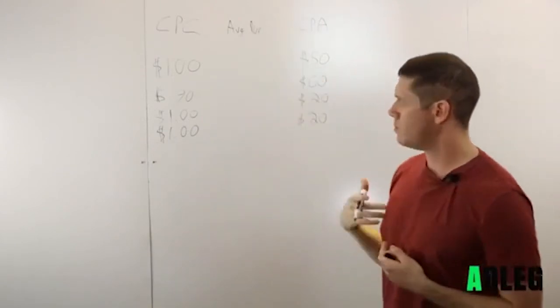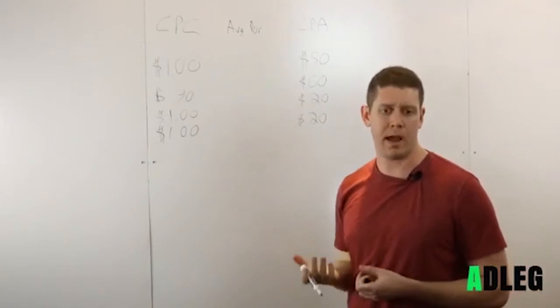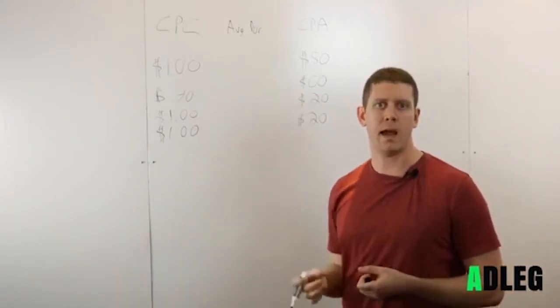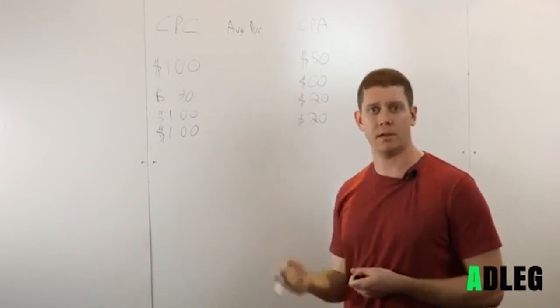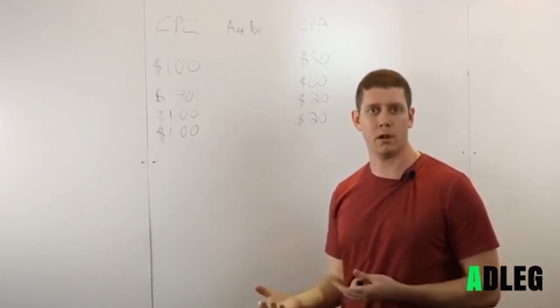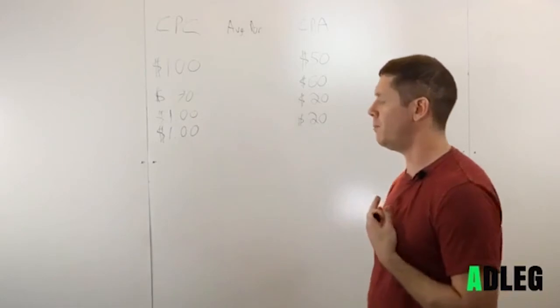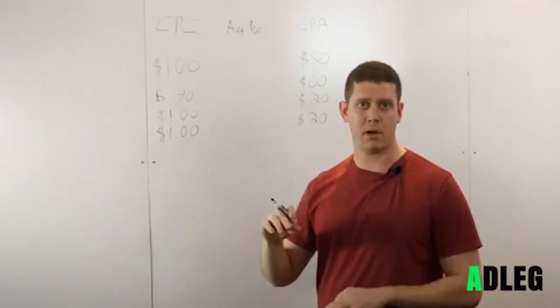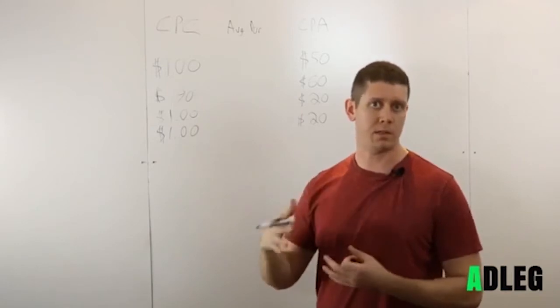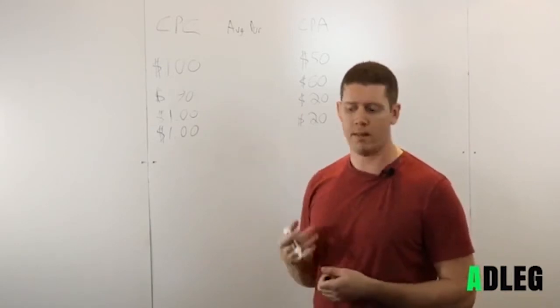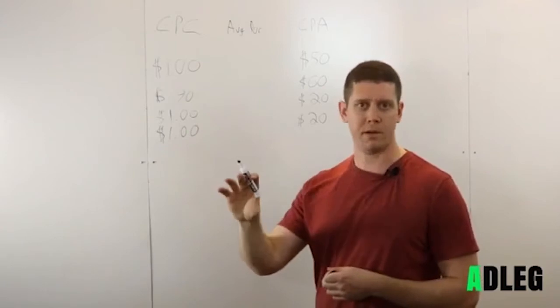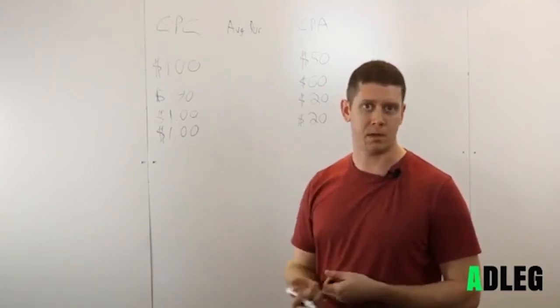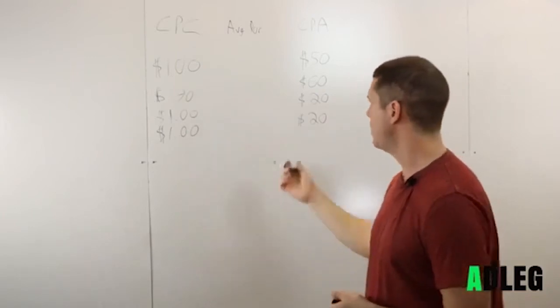Average position is how high up the page is your ad. Average position of 1.0 means your ad is at the top of the page every single time that keyword is triggered. And then anything below that is obviously just an average of where it's falling. If it's an average position of 1.5, that means you're spending half of your time in the first position and half of your time in the second position, most likely.